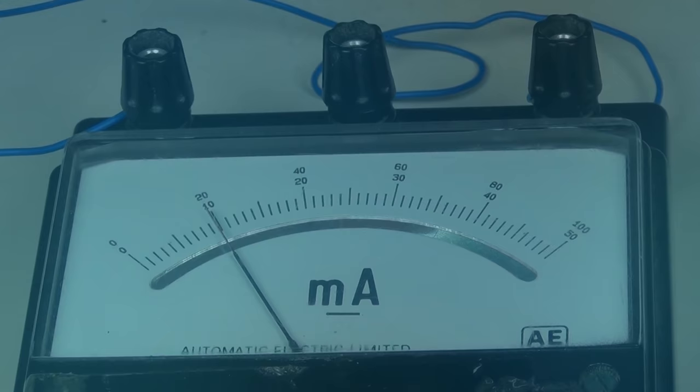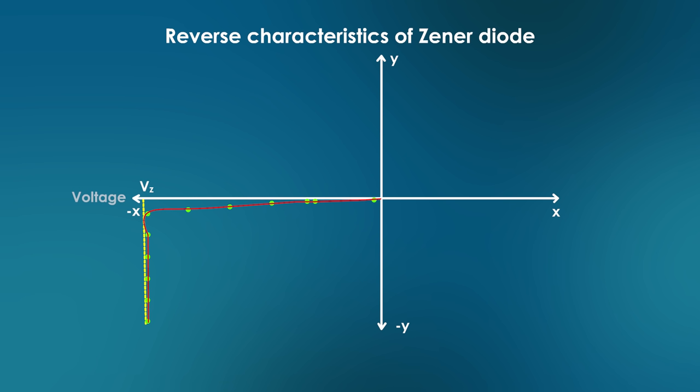The reverse characteristic is obtained by taking reverse voltage along negative x-axis and reverse current along negative y-axis.